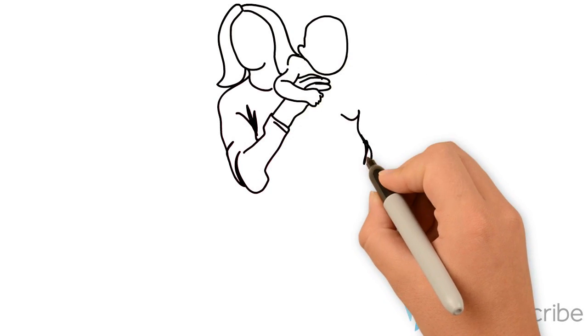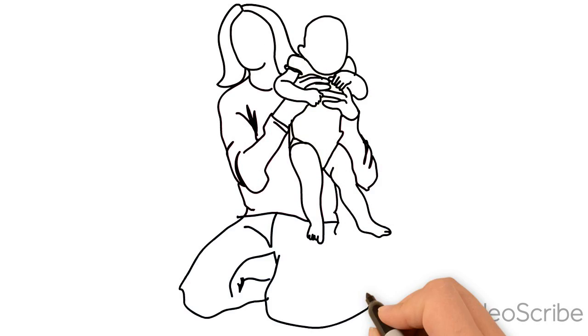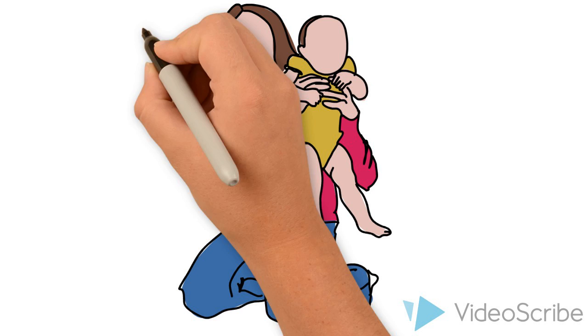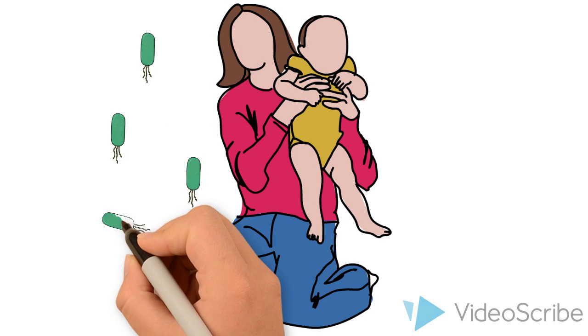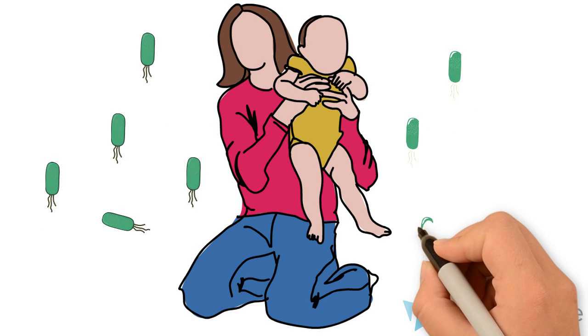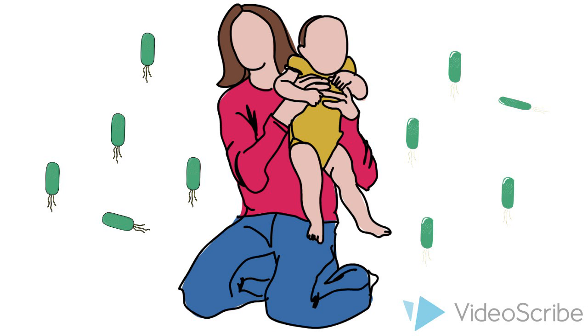It's even been shown that gut microbes can contribute to the systemic inflammation seen in obese individuals. Now, we know that there is a relationship between the gut microbiome and obesity. Research has been looking into the use of antibiotics in children and how they might disrupt the microbiome and predispose children to gaining excess body weight.